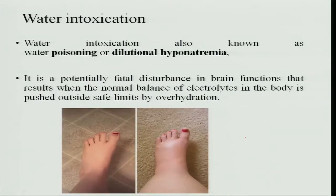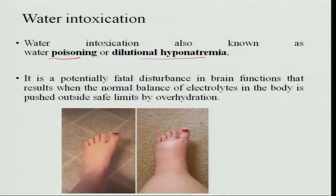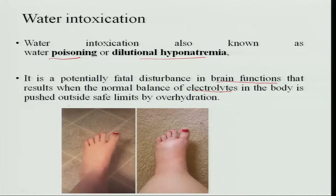Excess water is also dangerous. Some people keep drinking more and more water and it can cause intoxication. Water intoxication, also known as water poisoning or dilutional hyponatremia, is potentially dangerous and death can occur because brain functions lose their normal balance and electrolytes are disturbed. Since it is hyponatremia, the sodium quantity becomes very low relative to the water content, affecting the brain and pushing it outside safe limits of overhydration.